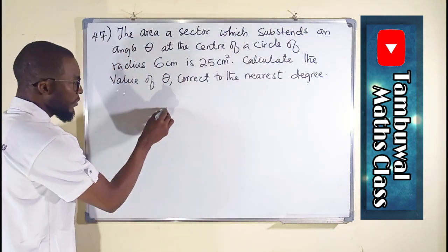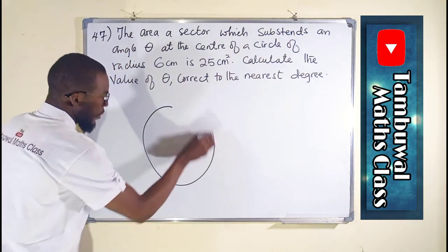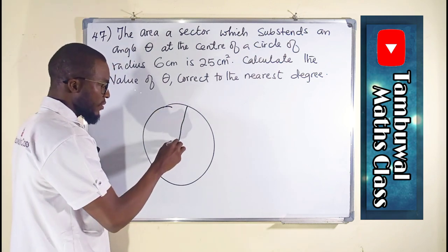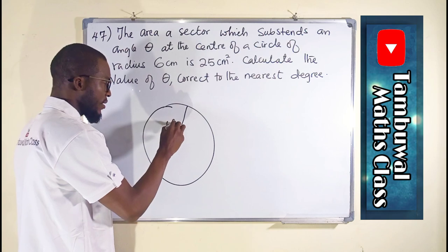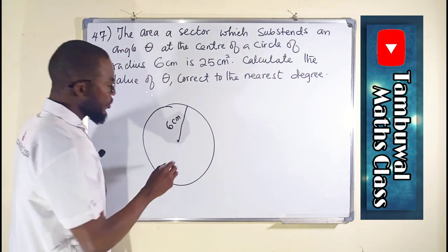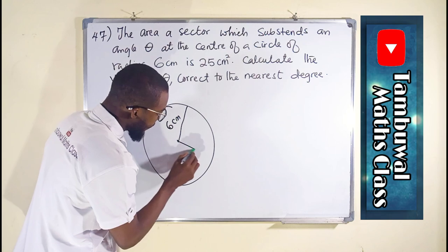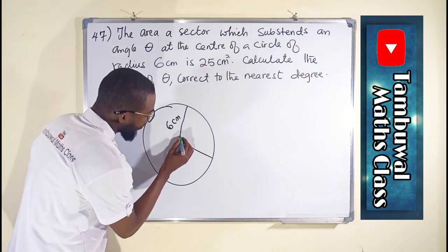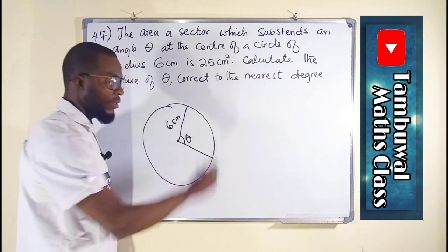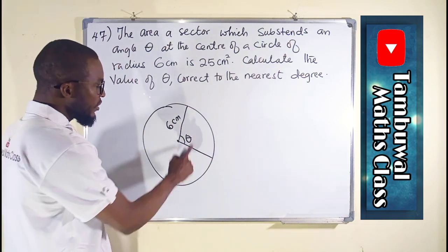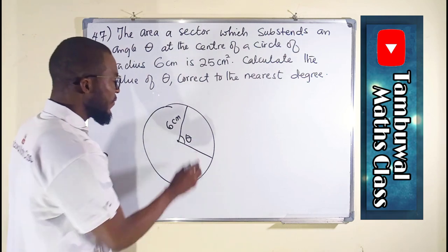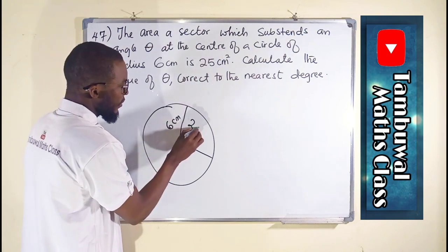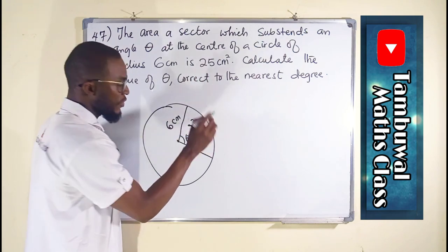Now if this is a circle of radius 6 centimeters from the center, to write a sector, that sector is subtended by a particular angle theta. So this is the angle we are looking for if the total area of this portion is 25 centimeters squared.